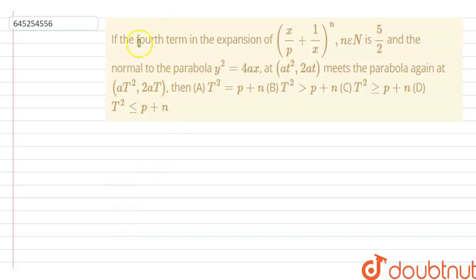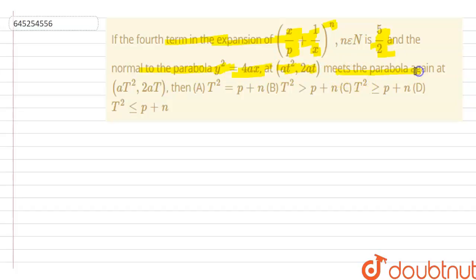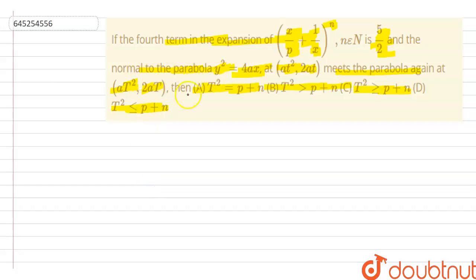In this question, the fourth term of the expansion (x/p + 1/x)^n is given as 5/2. It is also given that the normal to the parabola y² = 4x at the point (at², 2at) meets the parabola again at (aT², 2aT). We have to determine which of the given options is correct.